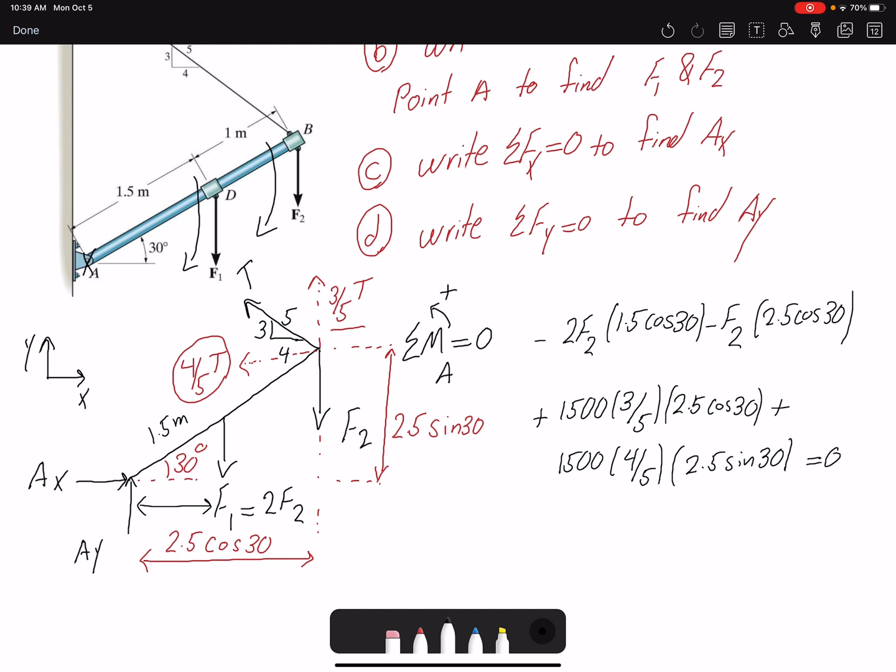That means that F2, the only unknown that I have, would be 725 Newtons. And we know F1 is twice F2, so that would be 1450 Newtons. So we found F1 and F2.